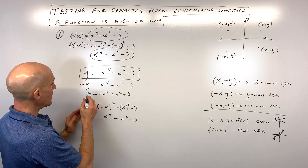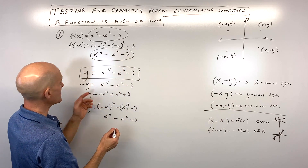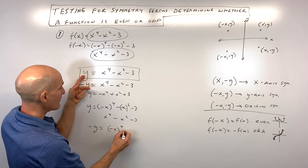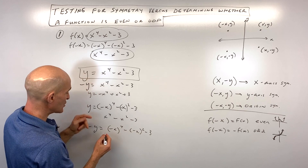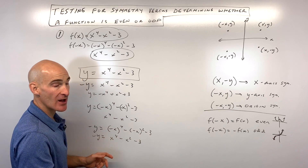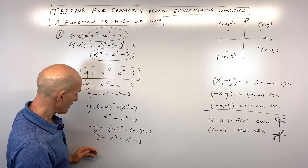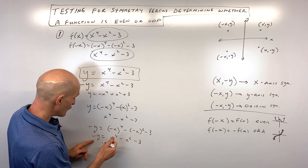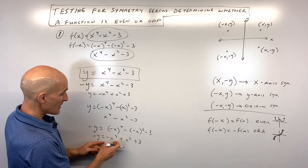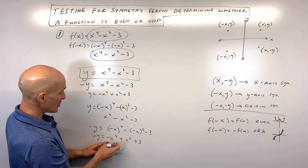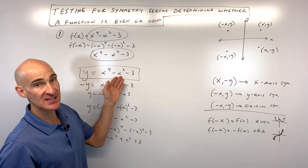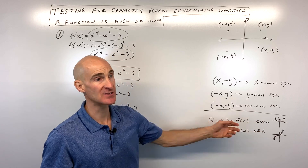For the origin symmetry test, we replace both x with negative x and y with negative y. Multiplying through by negative one gives positive y but negative x⁴, positive x², and positive 3, which doesn't match the original equation. So it doesn't have origin symmetry — only y-axis symmetry, or equivalently, it's an even function.